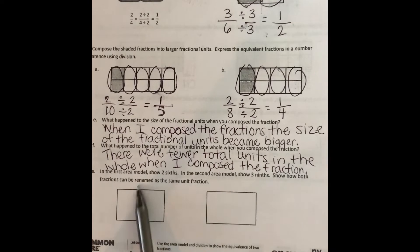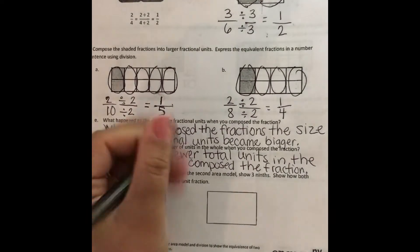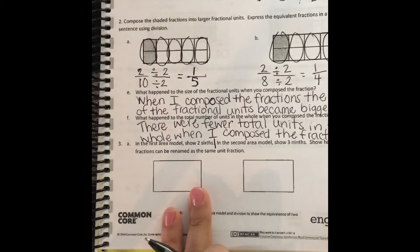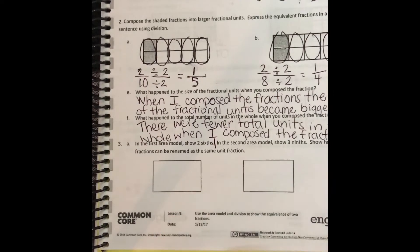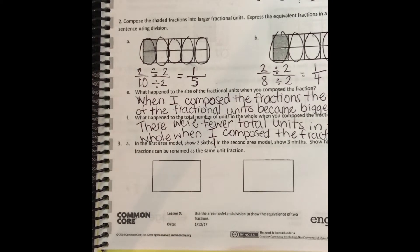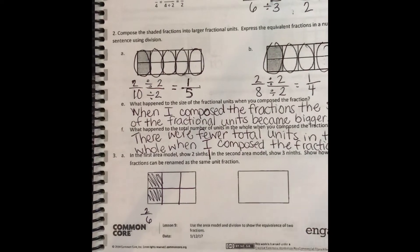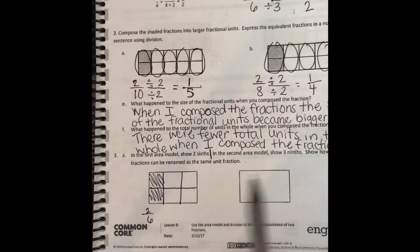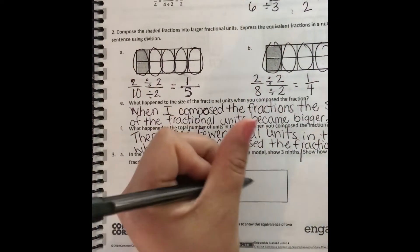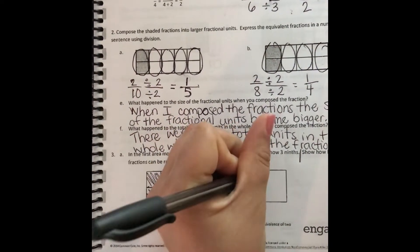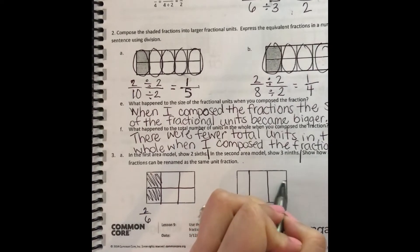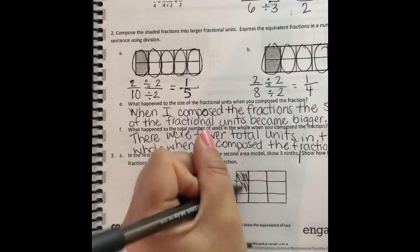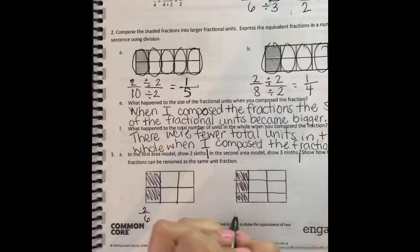In the first area model, show two sixths. So I'm just going to stop right there, my roadblock, and let's show two sixths. That means we're going to break it up into six parts and then color in two out of the six. So there is my two sixths. Now I'm going to come over here, and it says, in the second area model, show three ninths. I'm going to put my roadblock. So I'm going to break this up into ninths. Three, six, nine. And I'm going to color in three of them. And that is my three ninths.